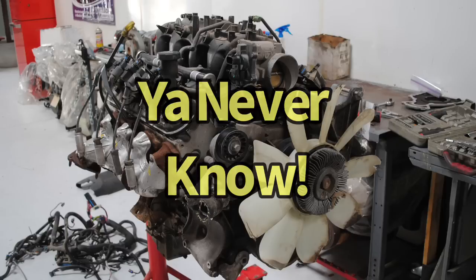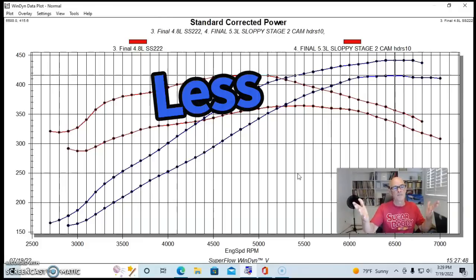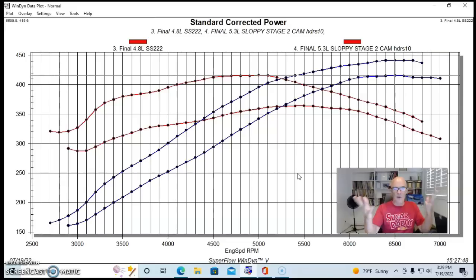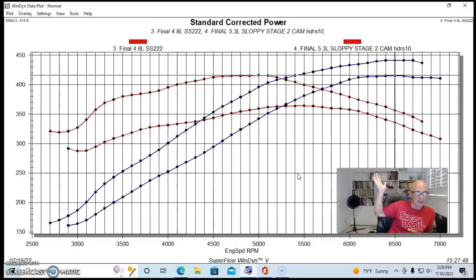We saw the two converge a little bit with the stock cam because the stock cam would be restricting the bigger 5.3 more than the 4.8. The 4.8 does, as they say, like to rev with its short stroke. It continued to make fairly good power and not fall off. It just doesn't make nearly as much as the 5.3 all the way through the curve. If you're getting on the throttle at 3000 RPM, you're going to have 50, 60, 70 more foot-pounds of torque.